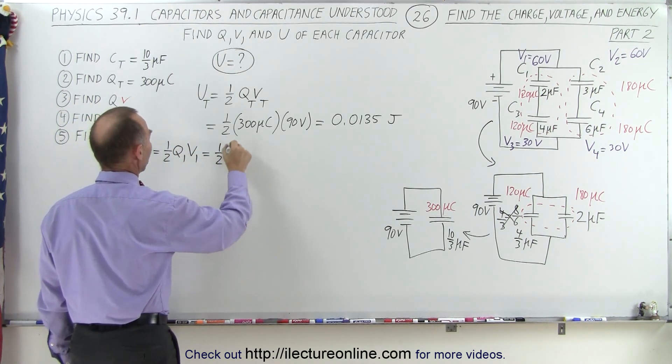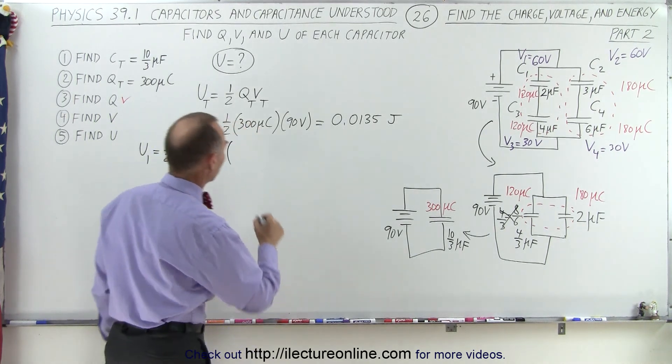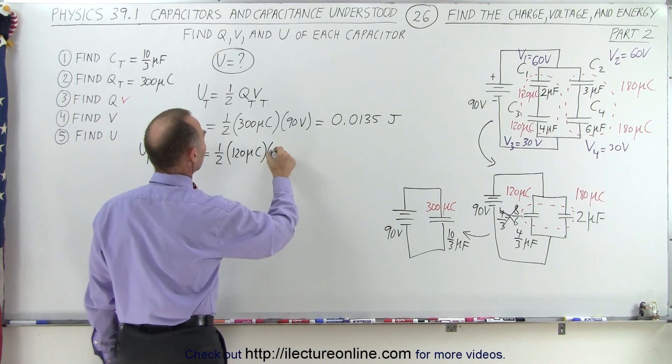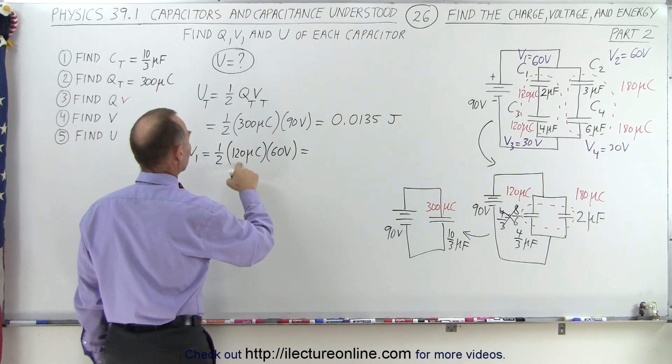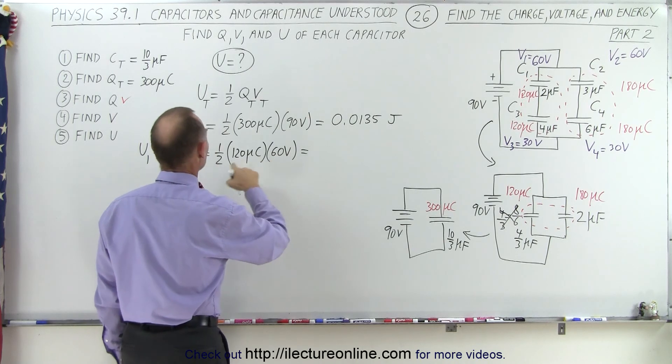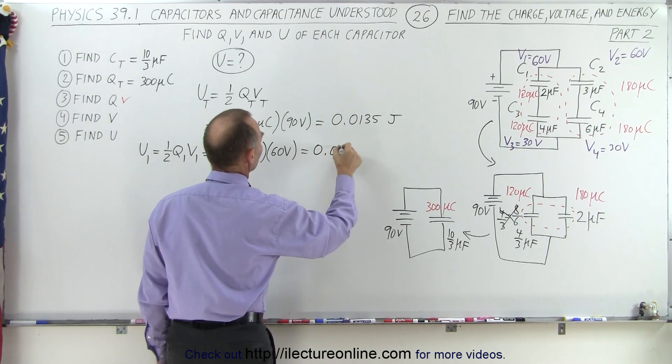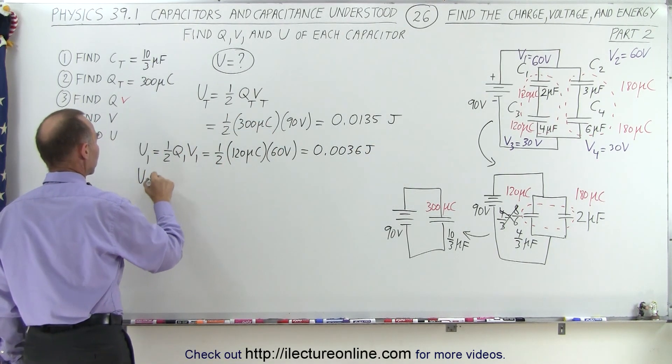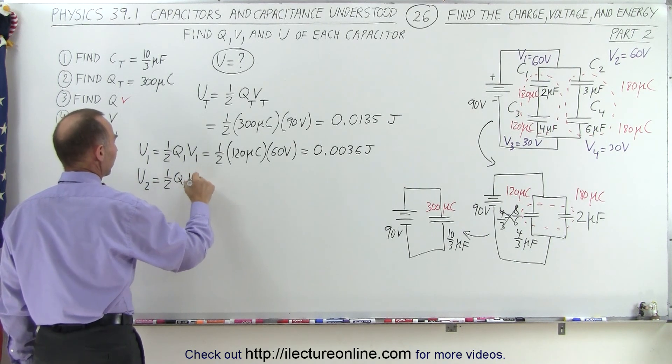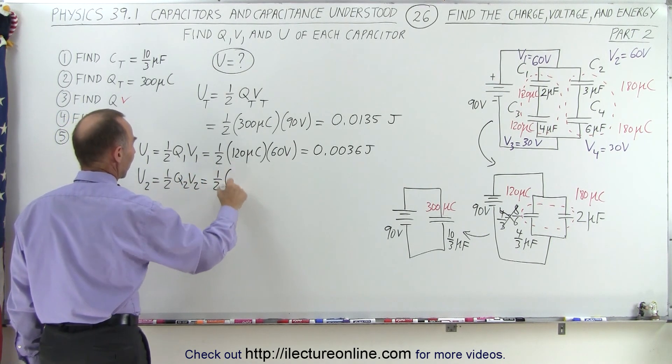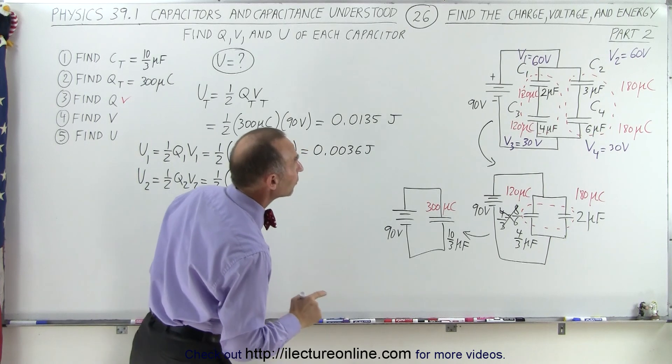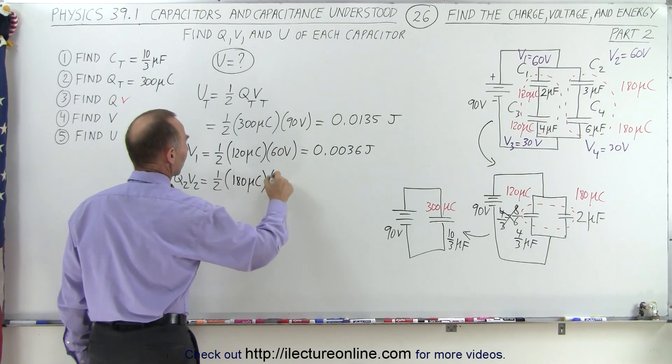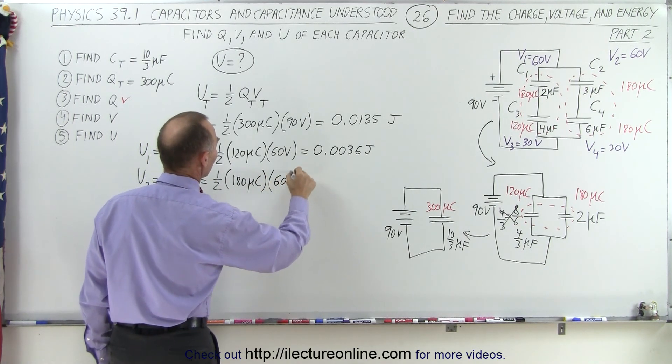That's equal to one-half times Q, which is 120 microcoulombs, times a voltage of 60 volts. And so that would be equal to 60 times 60, that would be 0.0036 joules. The energy on the second capacitor is 180 microcoulombs times a voltage of 60 volts.